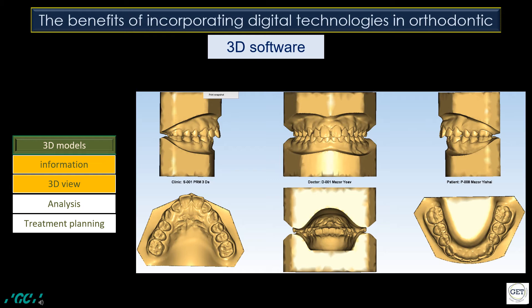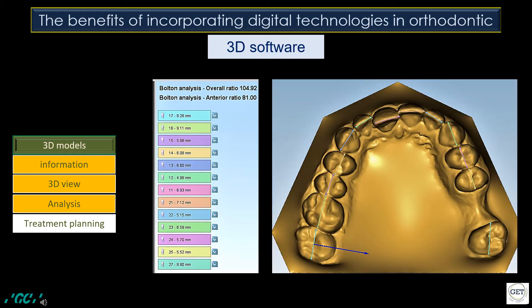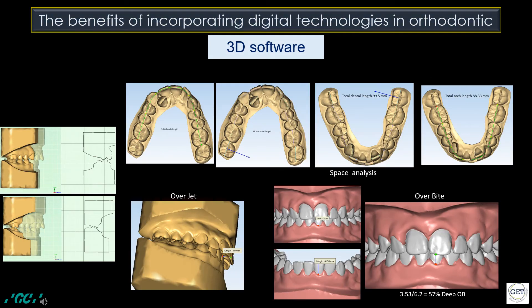The 3D model can be exported for different users and easily viewed by any simple 3D viewer. In order to extend the use of models for more advanced features, the models need to be segmented — the differentiation and definition of each tooth from the gingiva. At this point, some information such as Bolton analysis is obtained automatically. Many parameters such as overjet, overbite, arch-length discrepancy, and cross-cut views can also be obtained from these 3D models.